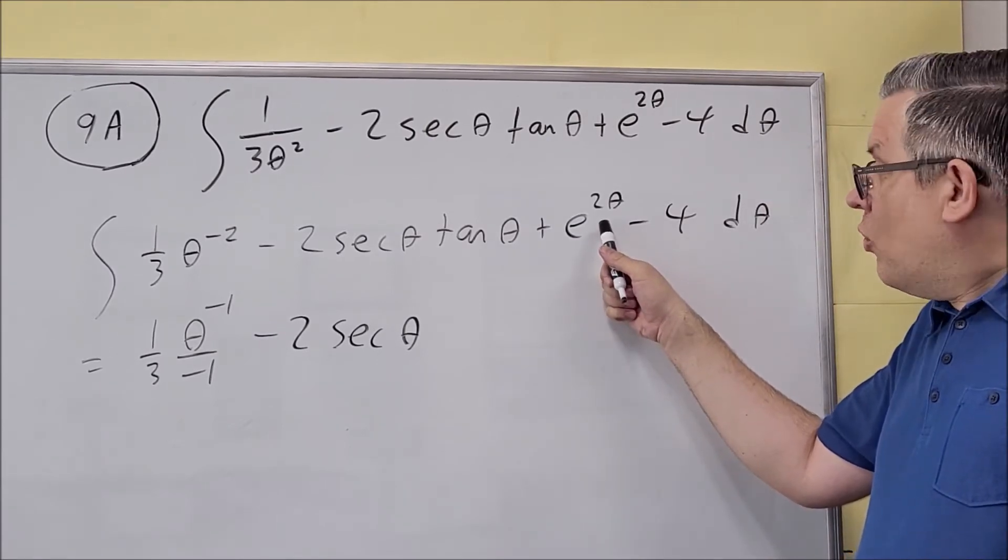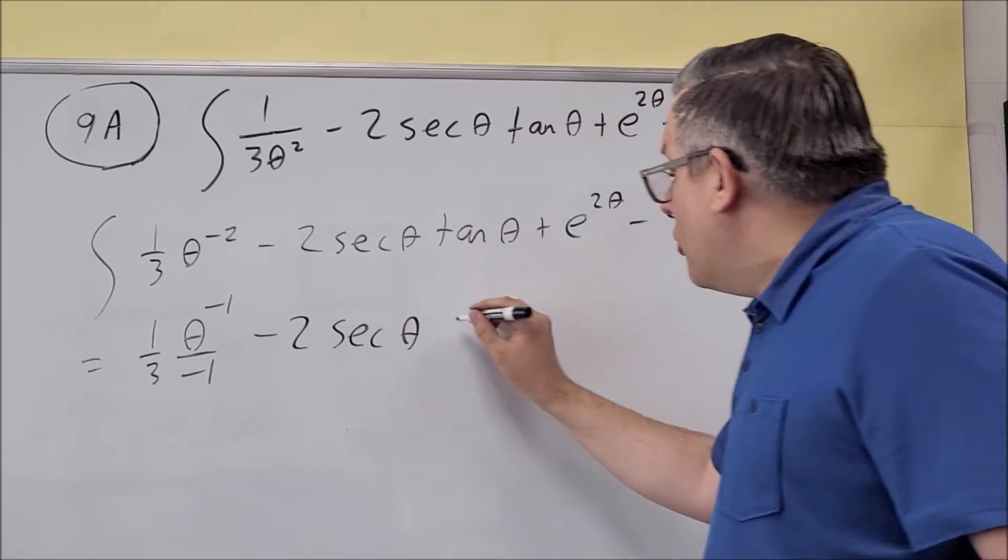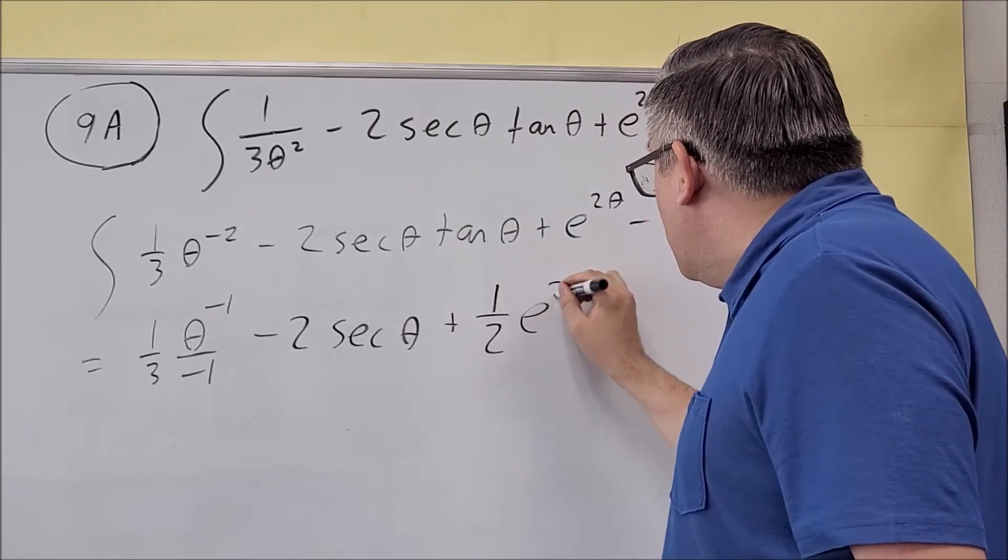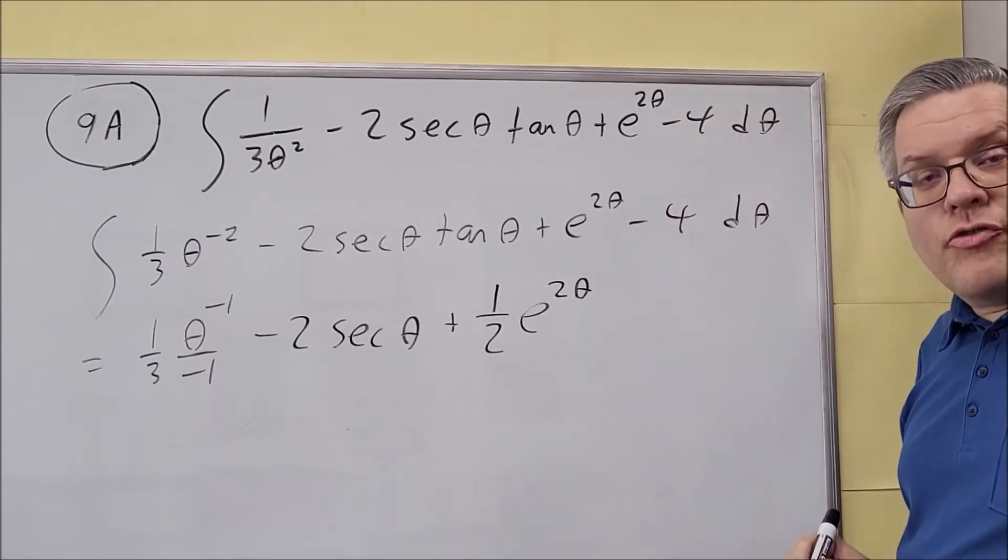This one is 1 over k times e to the 2 theta is the formula for that. So we're going to do 1/2, and then we add e to the 2 theta, and that's the antiderivative formula we use there.